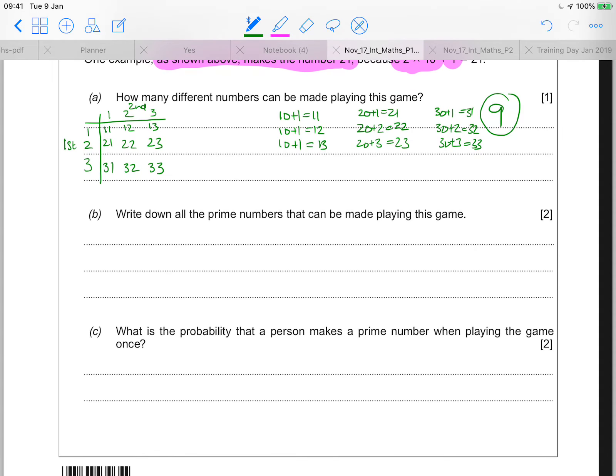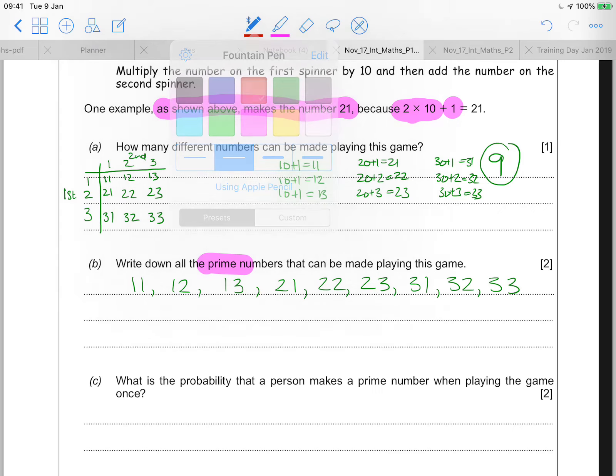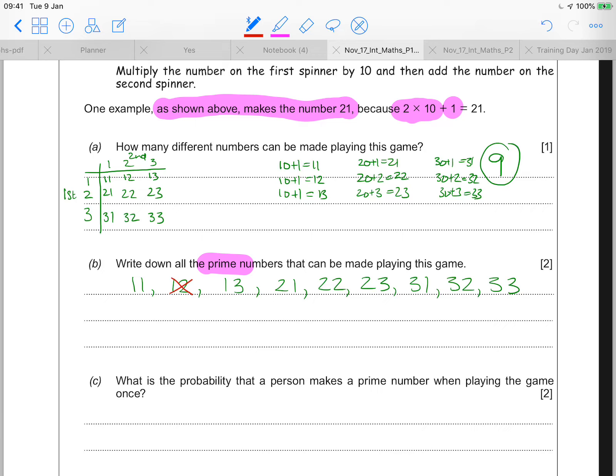Part B says write down all the prime numbers that can be made playing this game. Prime numbers don't have any factors except for themselves and one. So when I think about the different answers that are available, I'm going to write them in a long list and cancel out the ones that can't be prime. So when I think about the numbers that are available. As soon as I think about a number being in the times table, like 12 here is in my twos, my fours, my six times table. I've got to cancel it out because it's no good.